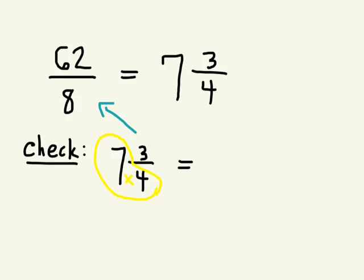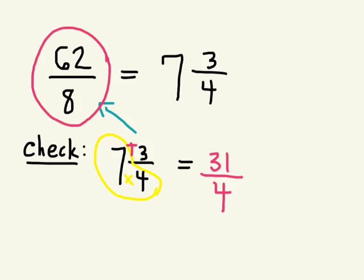You multiply the whole number by the denominator and add the numerator. Good. We're going to multiply this. And then we add the numerator. So 7 times 4? 28. 28 plus 3 is 31 over 4. Well, the original question was 62 over 8. Is that the same fraction?